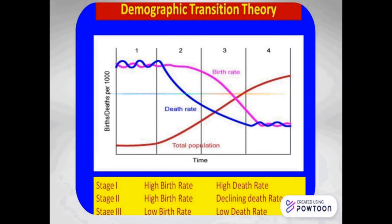In the third stage, both death and birth rates quickly drop due to improved living standards in terms of education, health, and nutritious food, which increases life expectancies. The theory of demographic transition helps to understand the various phases of population growth and can be applied to all economies. Each stage of the transition model represents a country's economic stage.